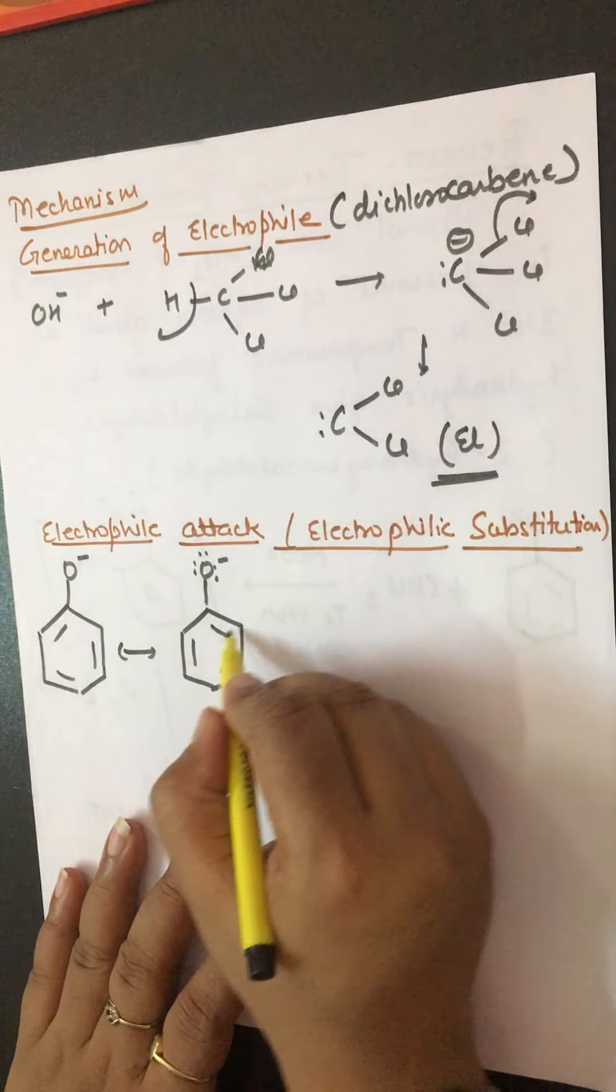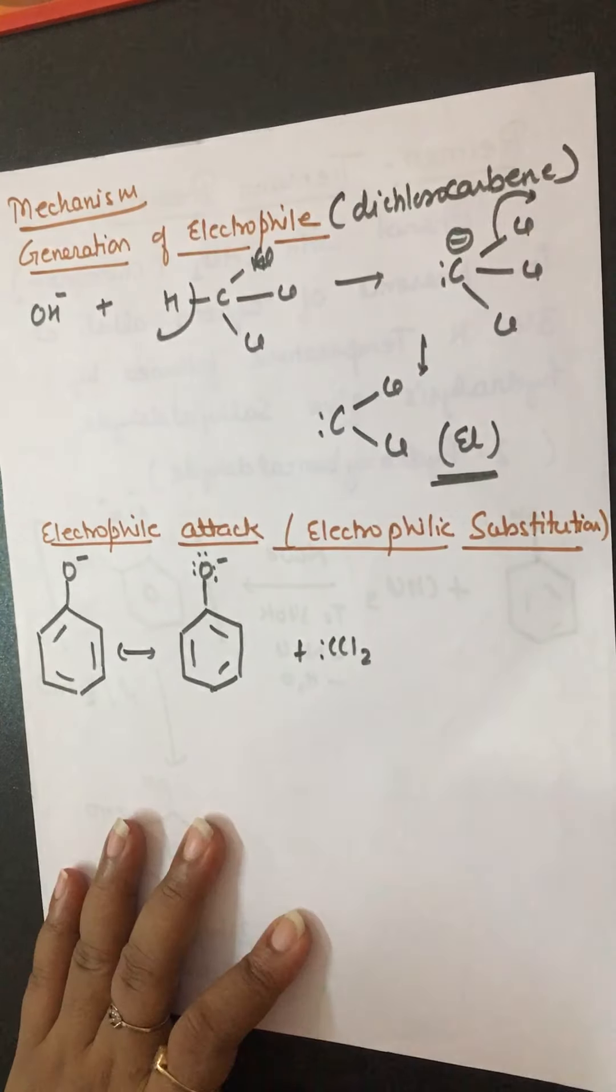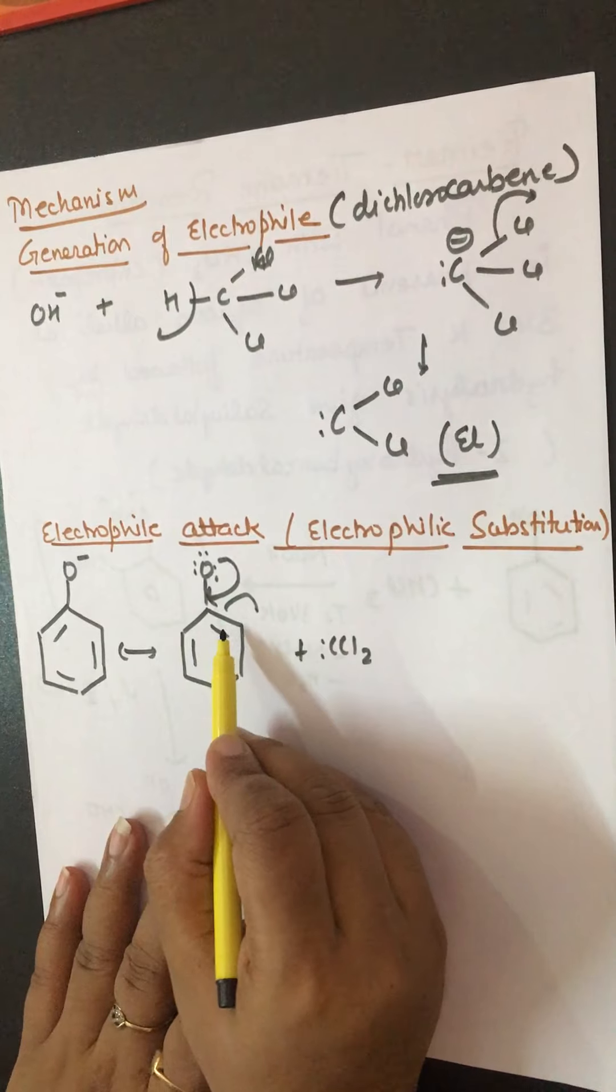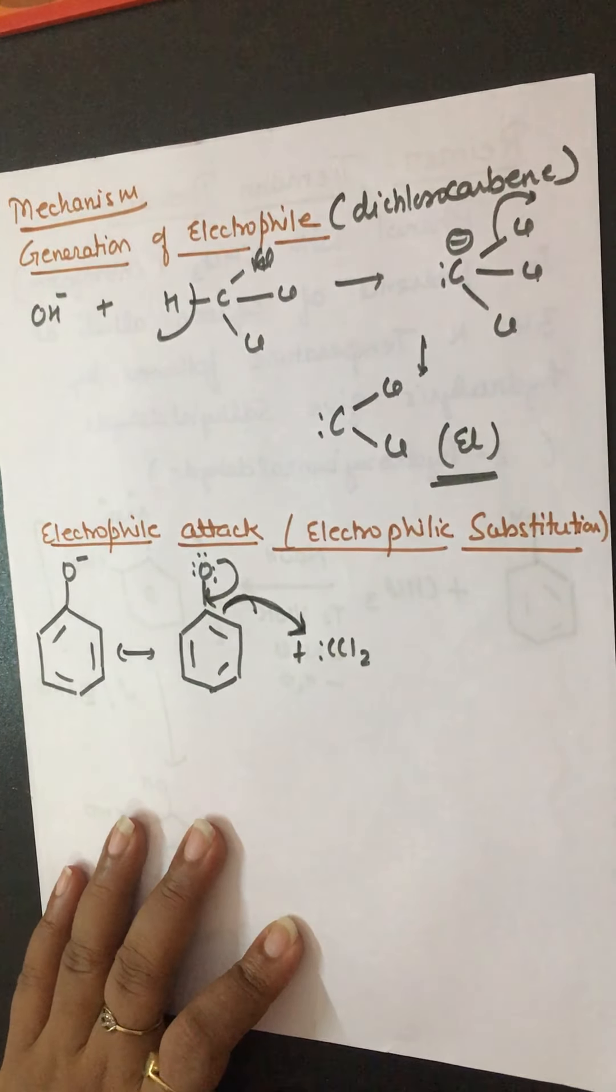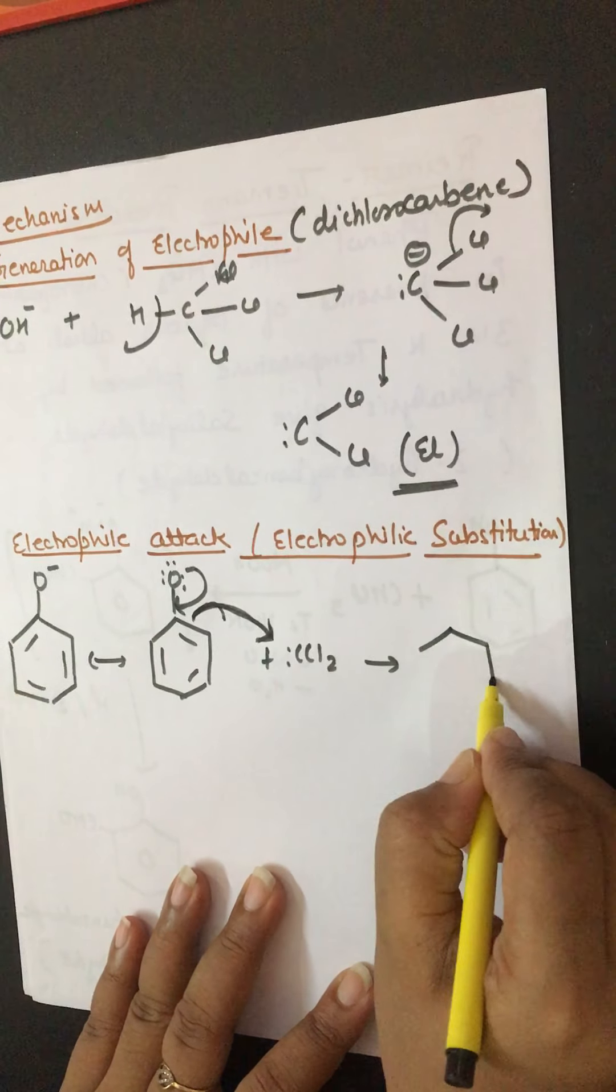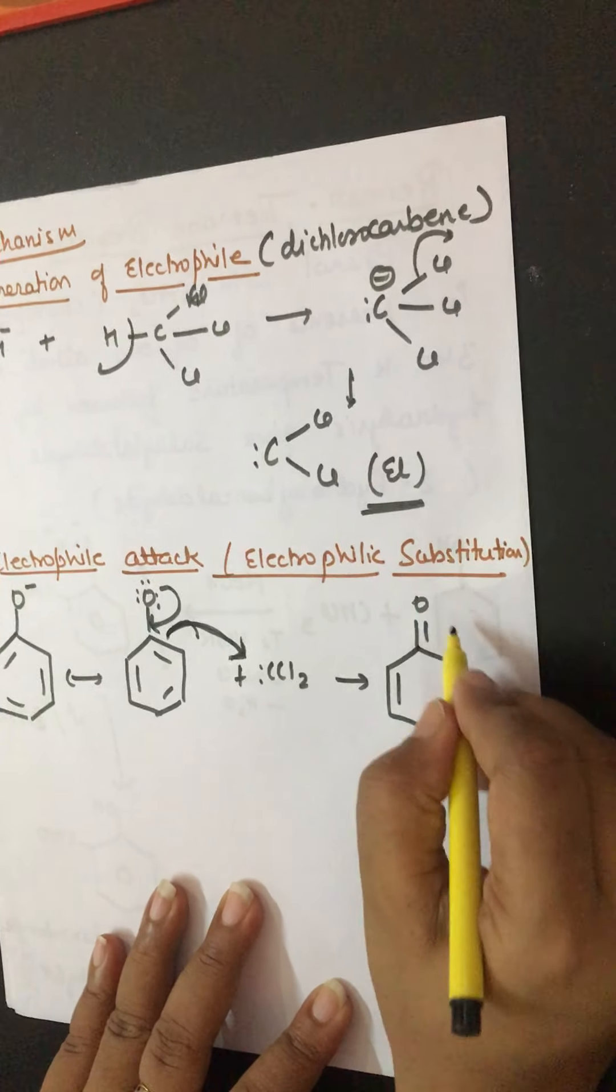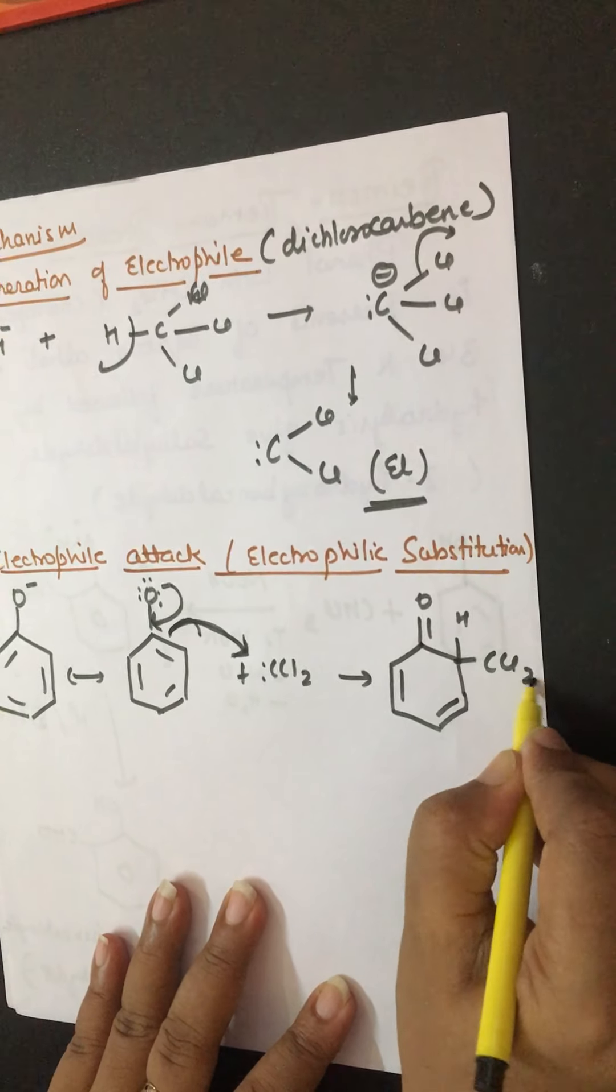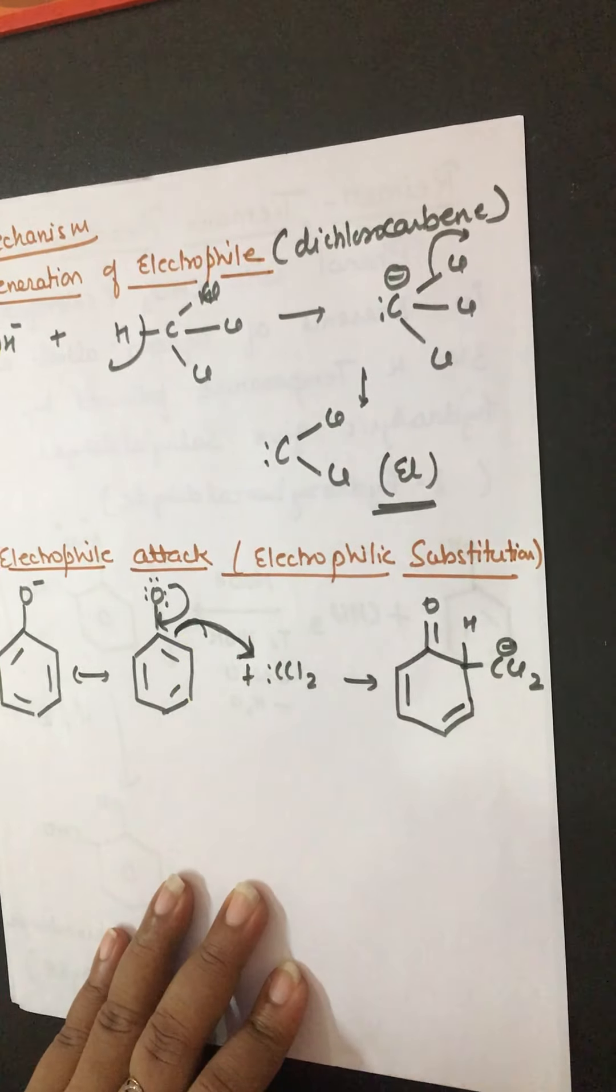Now what will happen? In this case, dichlorocarbene will attack. How will it attack? Electrons shift like this towards the benzene ring, and these electrons will donate to the electrophile dichlorocarbene, and a bond will form in such a way. Now it will have a double bond, this one hydrogen already present, and CCl2. Now carbon has a negative charge because an electron is given to the carbon.